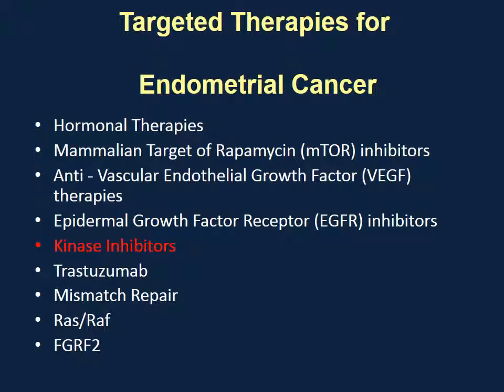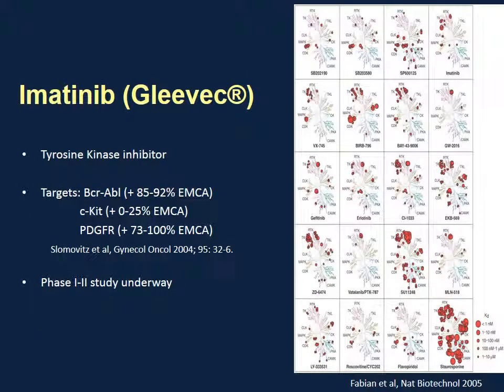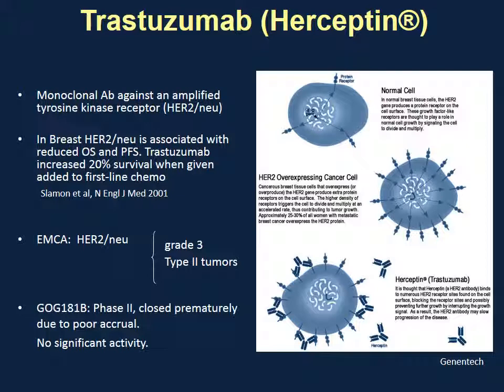The next identified are the kinase inhibitors. Gleevec is a tyrosine kinase inhibitor that is very active in many cancers, and it is potentially active in endometrial cancers if we can test for appropriate targets such as C-Kit, platelet-derived growth factor receptors, or BCR-ABL. Herceptin, similarly, is a monoclonal antibody against some of these tyrosine kinase receptors, and if the patient has appropriate profiling, it may be appropriate to treat a small group of patients, though clinical trials have been somewhat disappointing.